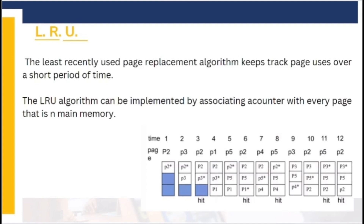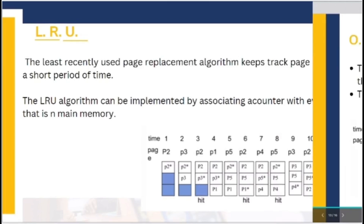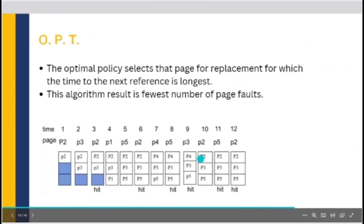OPT, or Optimal, is a caching algorithm used to determine which item to remove from a cache when space is needed for a new item. Unlike other caching algorithms such as LRU or FIFO, which are based on past usage history, OPT is based on future usage.